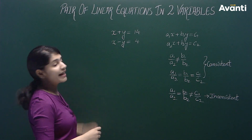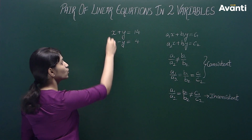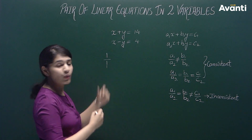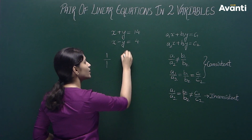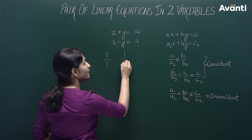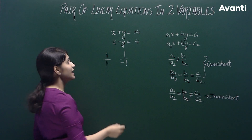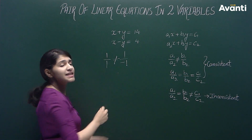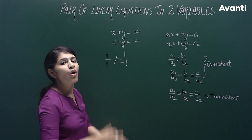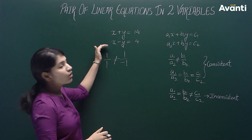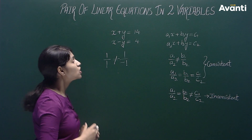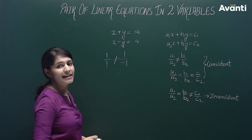We can see the two equations. The coefficient of x gives a ratio equal to 1. If we talk about y, then in the first equation the coefficient of y is 1, and in the second equation it is minus 1. So you can see that these two ratios are not equal, which means that this pair will have a unique solution. So we can see that this pair is consistent.